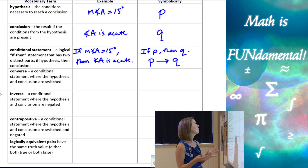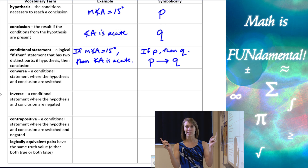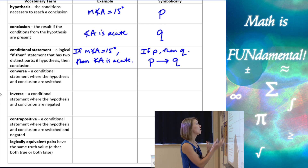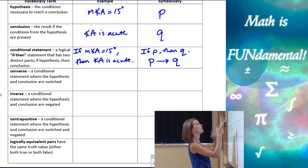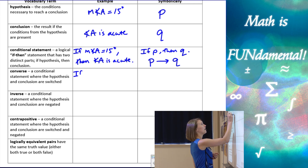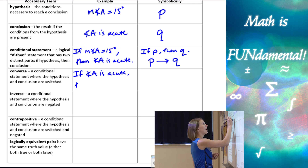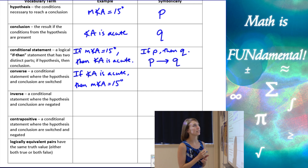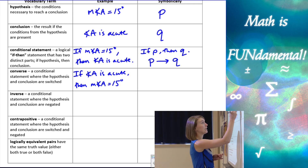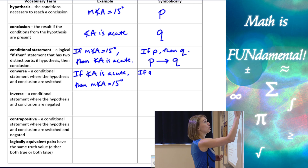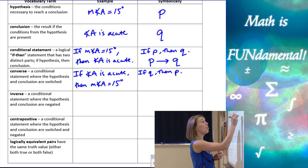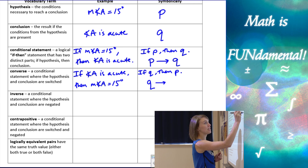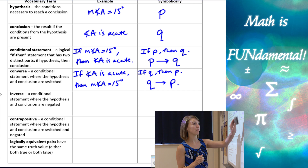A converse is when we take a conditional statement and switch the hypothesis and the conclusion. Using the same example: if angle A is acute, then the measure of angle A is equal to 15 degrees. Symbolically, that's 'if Q, then P,' or Q implies P — written as Q with an arrow to P.